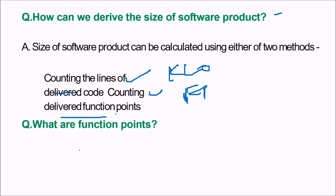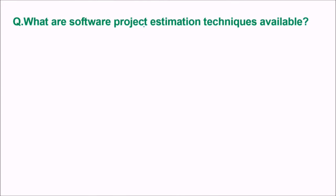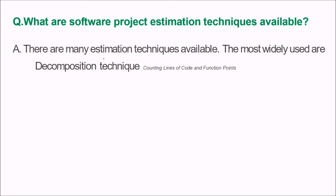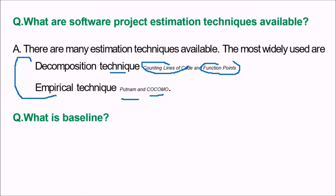What are function points? Function points are the various features provided by a software product; it is considered a unit of measurement of software size. What are software project estimation techniques available? The most widely used are decomposition techniques — counting lines of code and function points — and empirical techniques like Putnam and COCOMO. LOC and function points belong to decomposition technique; Putnam and COCOMO belong to empirical technique.